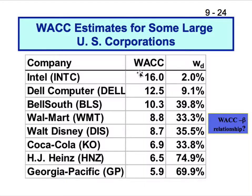My research question is: is there a relationship between WACC and beta? An ocular examination would indicate that the beta of Intel and Dell is probably higher than that of Georgia Pacific, Heinz, and Coca-Cola — so technology firms have higher systematic risk. If we find that relationship, how can it be useful for portfolio management?